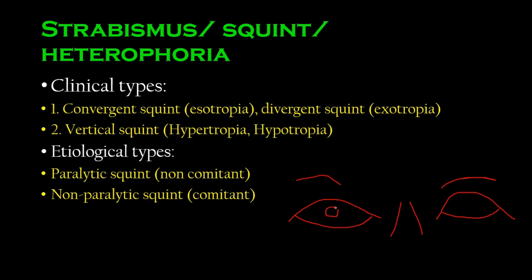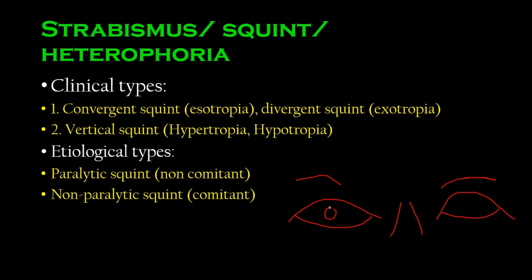There is also divergent squint, which is the opposite — one eye looks straight while the other looks towards the outside. The difficult term for convergent squint is esotropia, and for divergent squint it's exotropia. Then there are vertical squints: hypertropia, where one eye looks upward above the usual level, and hypotropia, where one eye looks downward. There are also two other types — incyclotropia and excyclotropia — but those are less common.